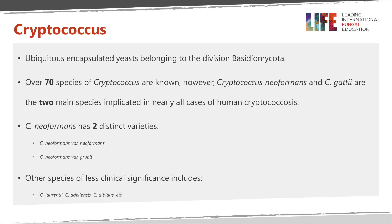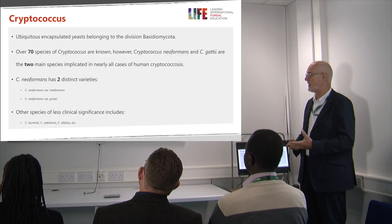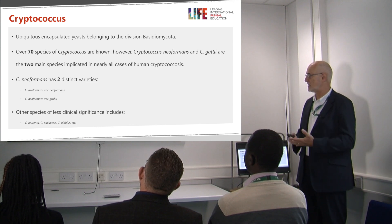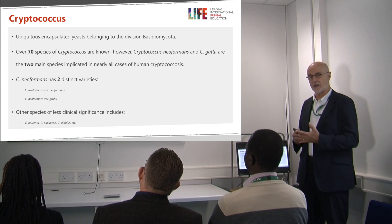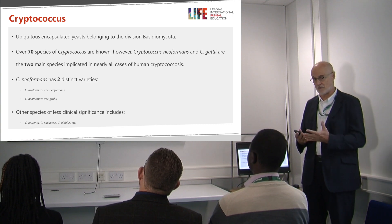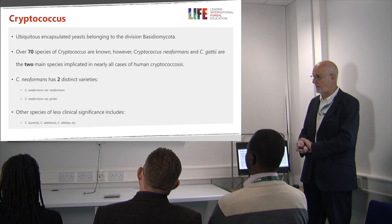There are distinct varieties of Cryptococcus neoformans. First of all there's Cryptococcus neoformans variety neoformans and then secondly there's Cryptococcus neoformans variety grubii. The other species are of less clinical significance and these include Cryptococcus albidus and many more. We really don't know whether or not these are important in terms of human infection.